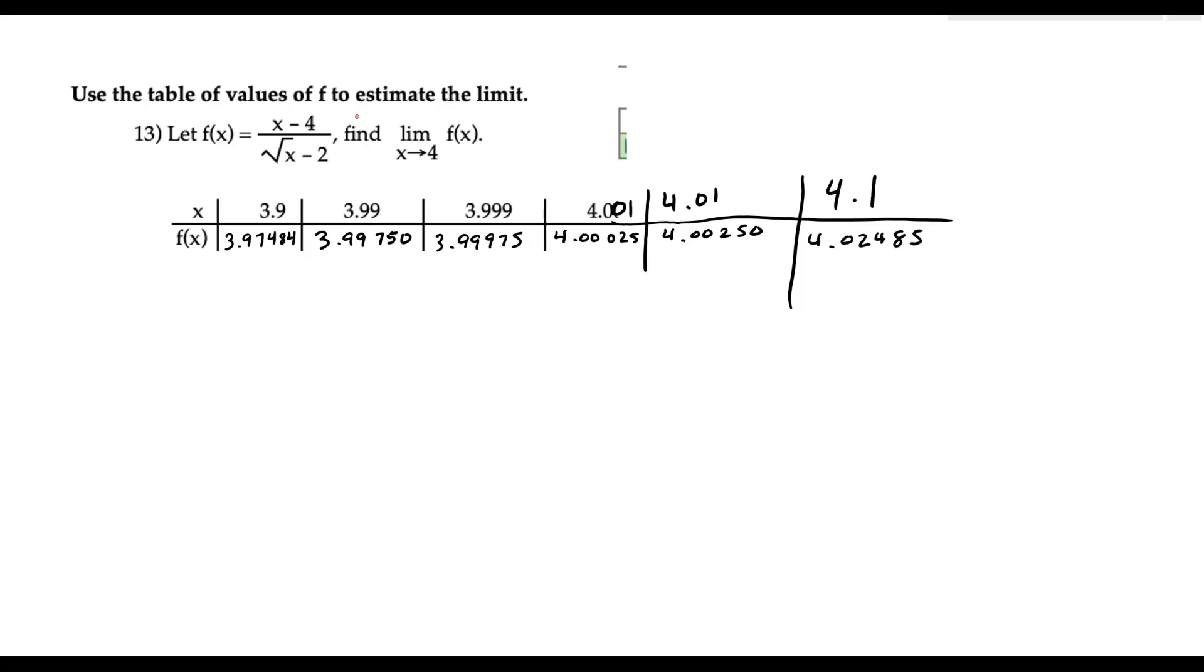What is possible to do is pick values really close to 4. We're creating that little h value if you will. If x equals 4, we're going to look at 4 from the left and from the right.